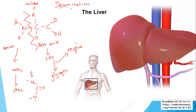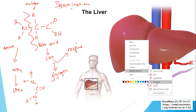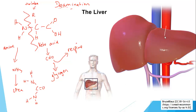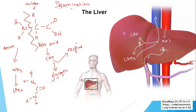Here is urea - that is our ultimate product of deamination, occurring in the liver. To sketch this out: lots of amino acids come in via the hepatic artery or the hepatic portal vein. We convert them into a carbohydrate part, which is respired or stored as glycogen, and into urea. That urea is put back into the blood via the hepatic vein, travels around the body, and ultimately ends up at the kidneys - which will be our next stop.